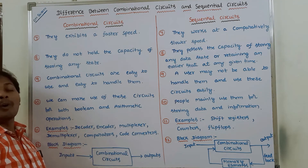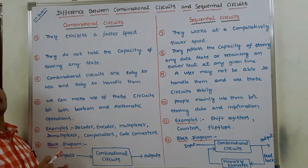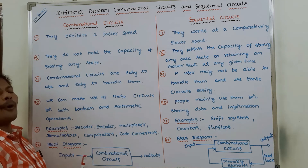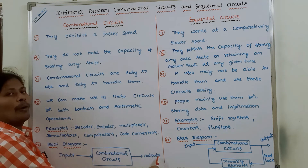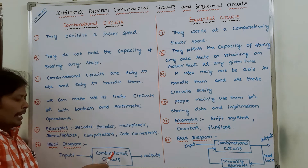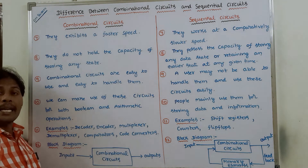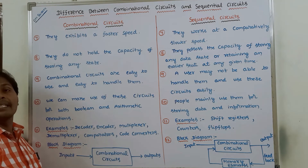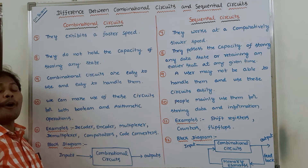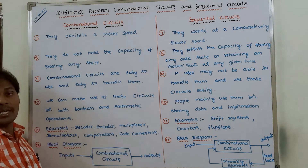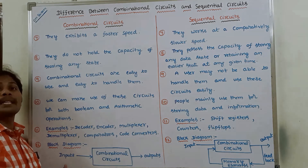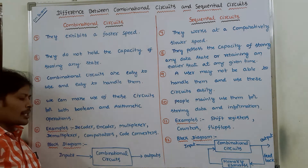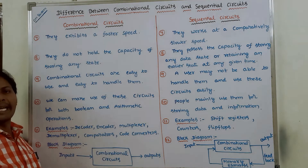Twelfth point: the block diagram of combinational circuits. In the case of combinational circuits, it mainly consists of three parts: input, output, and the combinational circuit block. In this block, we use logic gates such as AND gate, OR gate, and NOT gate to perform arithmetic or boolean operations. Because of that, the output depends only on the present inputs.